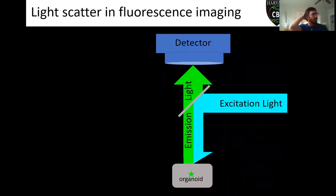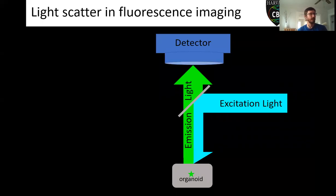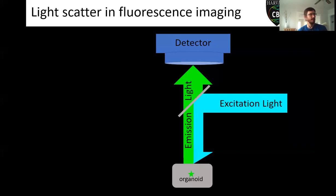Whenever we start doing 3D imaging in light microscopy, we run into the problem of light scatter. This is just a rough diagram of a fluorescence microscope. We have your organoid sitting here — this big gray rectangle. We're going to shine some excitation light onto that sample. We've got a fluorescent molecule, this green star somewhere on the inside, that's going to excite and give off fluorescence. That fluorescence is going to travel back up into our microscope and reach our detector so that we can get an image.